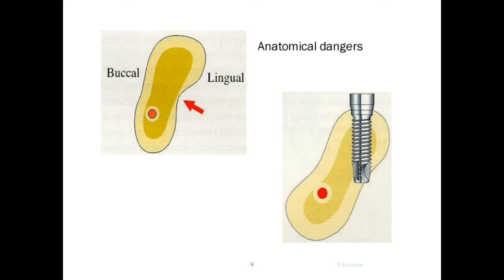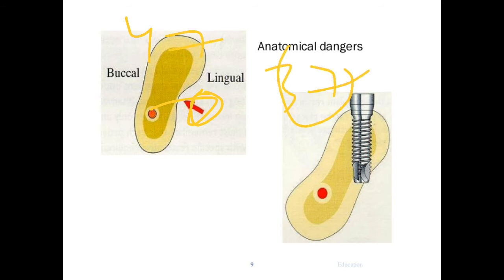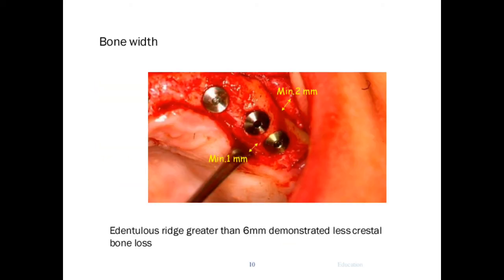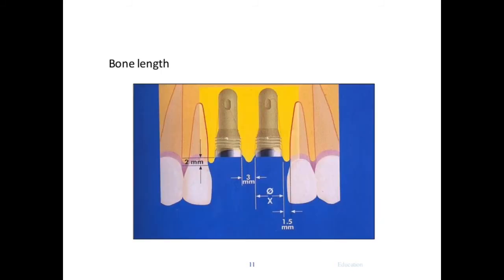When placing implants in the mandible, always be careful about the lingual bulge around the mandibular fossa or lingual fossa. When replacing teeth in the 4-7 or 3-7 region, remember that the bone curves lingually, so the implant can enter that lingual area — be careful, as this is a very common complication. When placing an implant, make sure you have bone both buccally and lingually. A minimum of 1 mm of bone is required on each side.